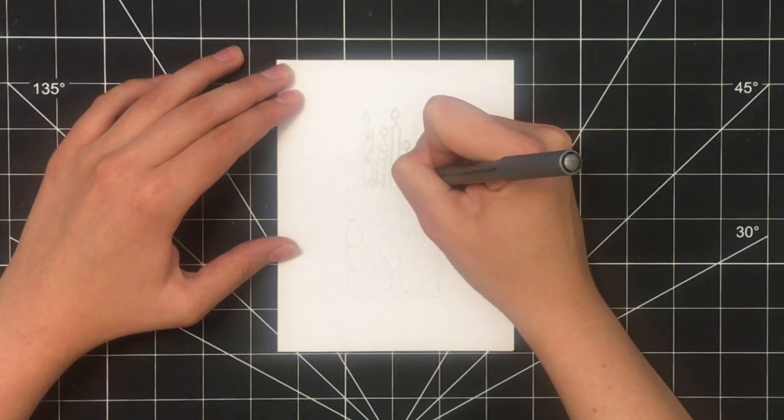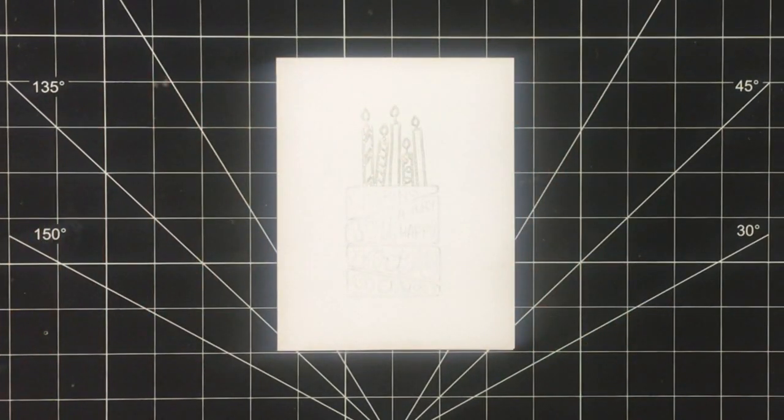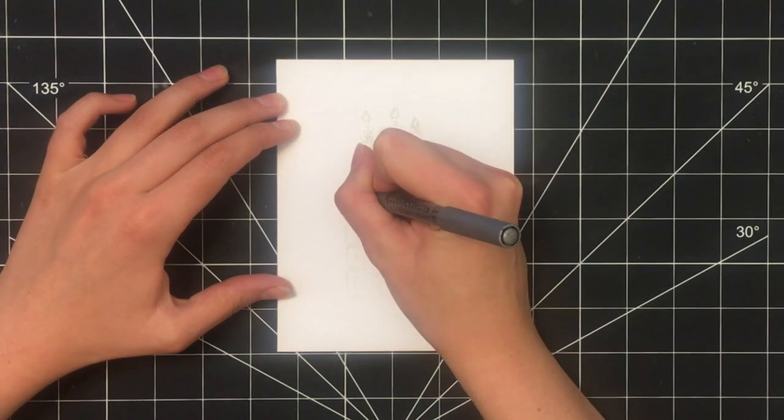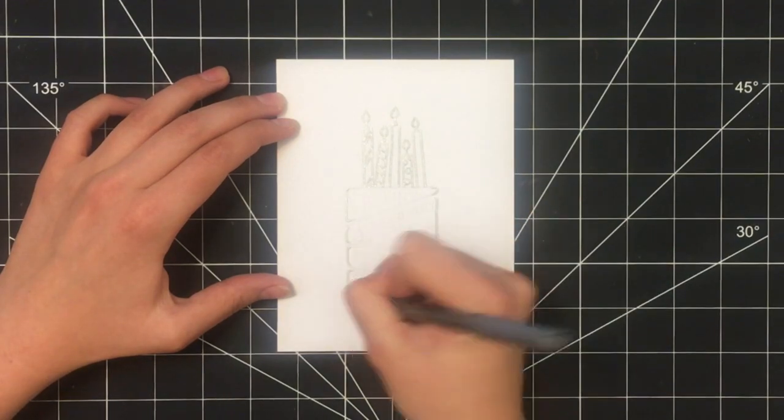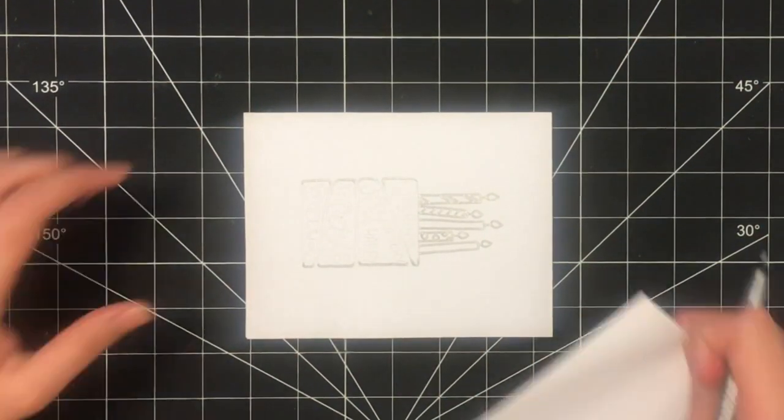I started with the candles at the top of the card and then slowly worked my way down. I drew these four different sections that the words sit in.